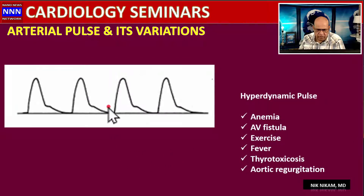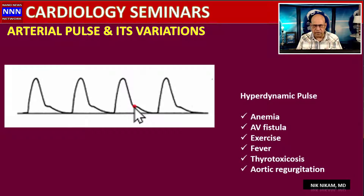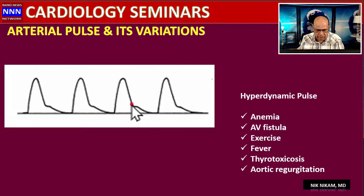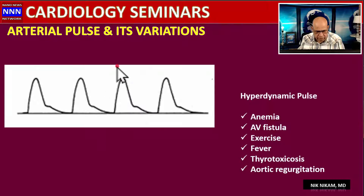In a hyperdynamic heart, there is a very brisk upstroke and a steep downslope with a low dicrotic notch, suggesting increased volume, increased vascular capacity, and vasodilation. This pattern is seen in anemia, fever, AV fistula, aortic regurgitation, pregnancy, and thyrotoxicosis. Whenever there is vasodilation and an increased vascular bed, resistance is low, diastolic pressure drops, and increased volume raises cardiac output, producing a large pulse wave.